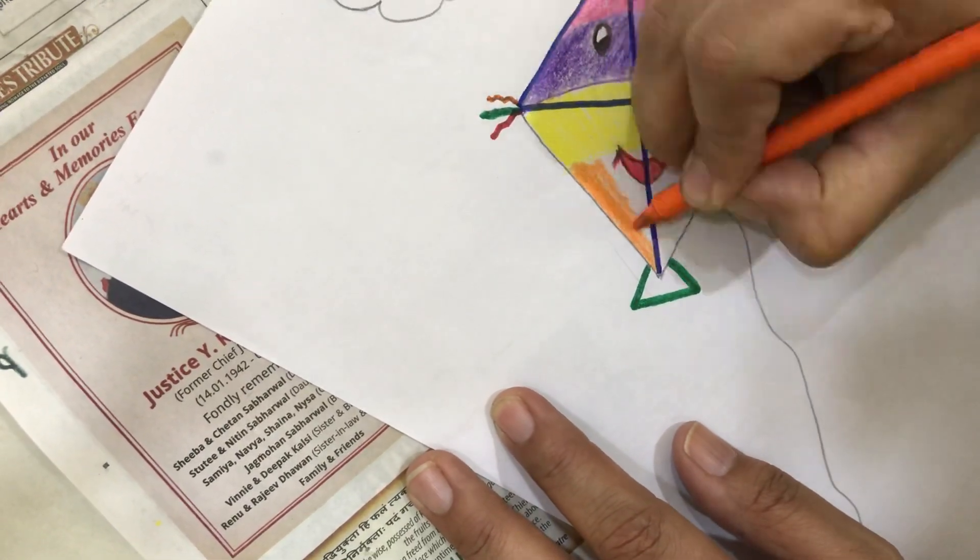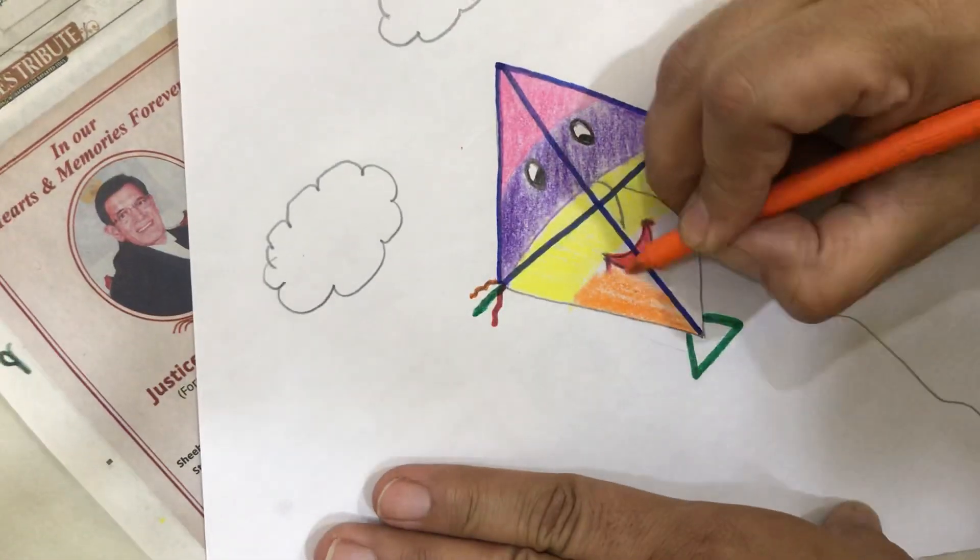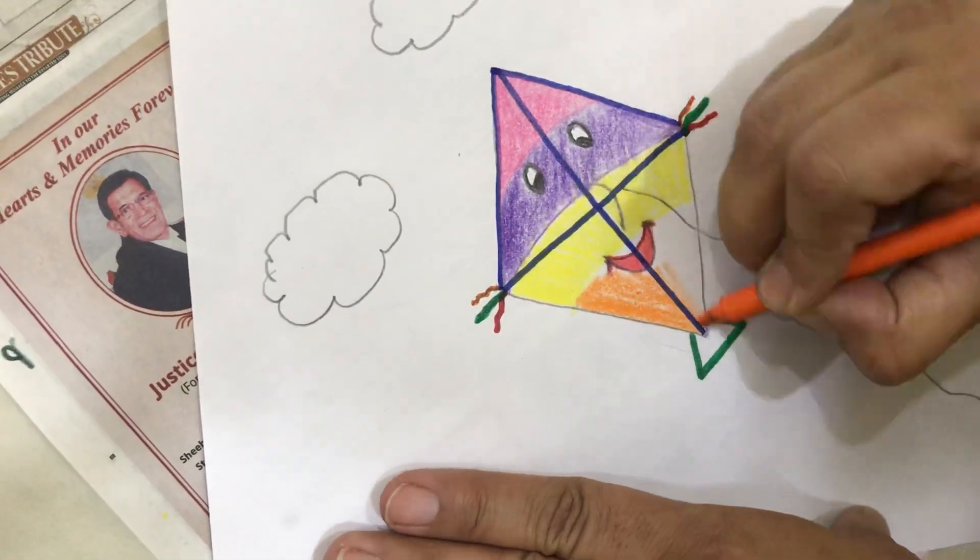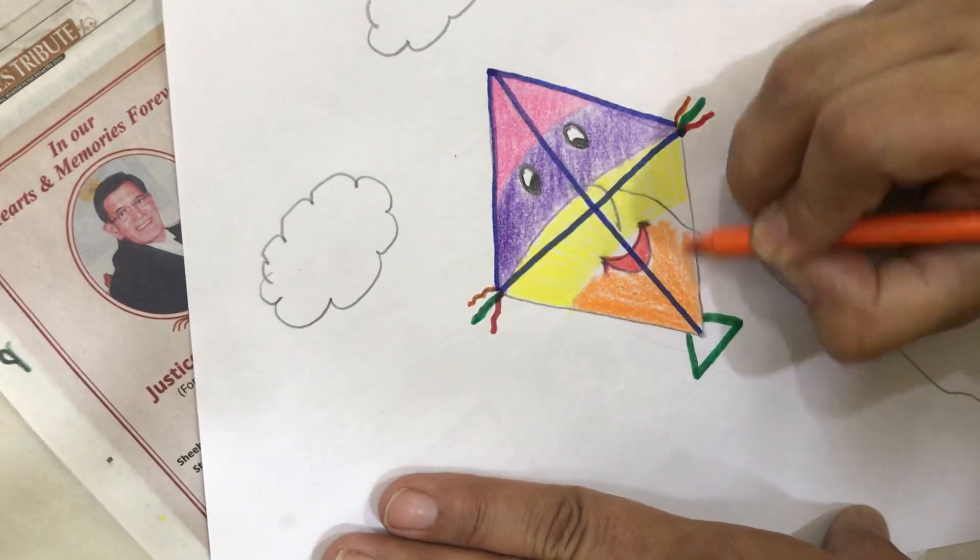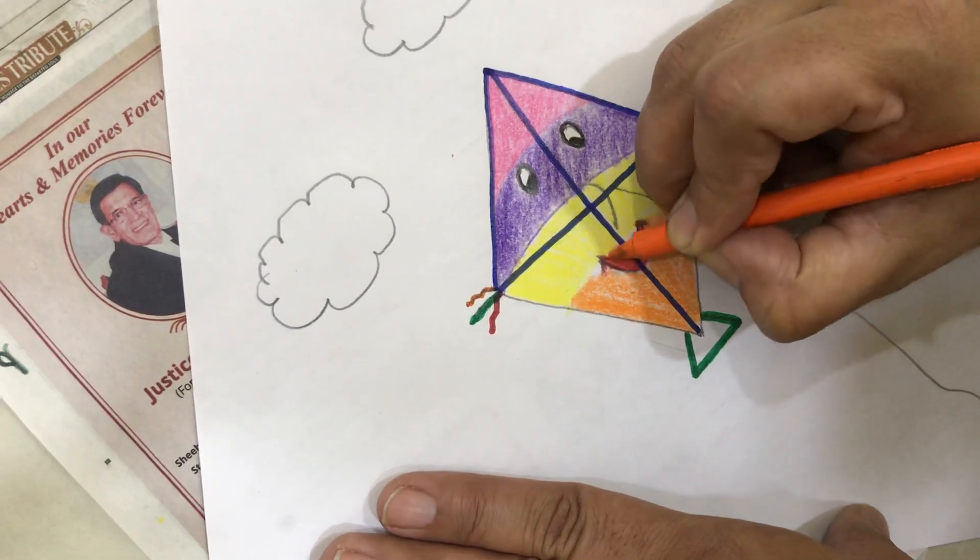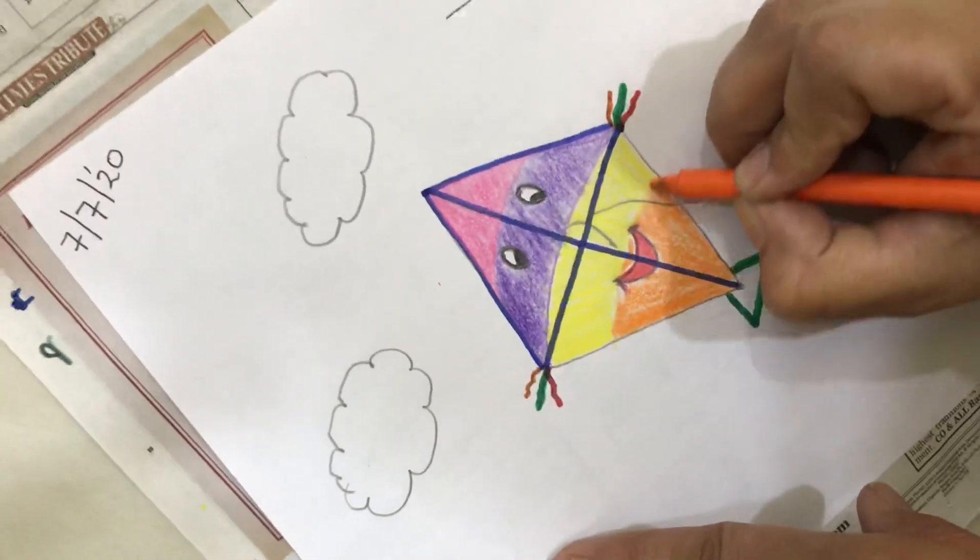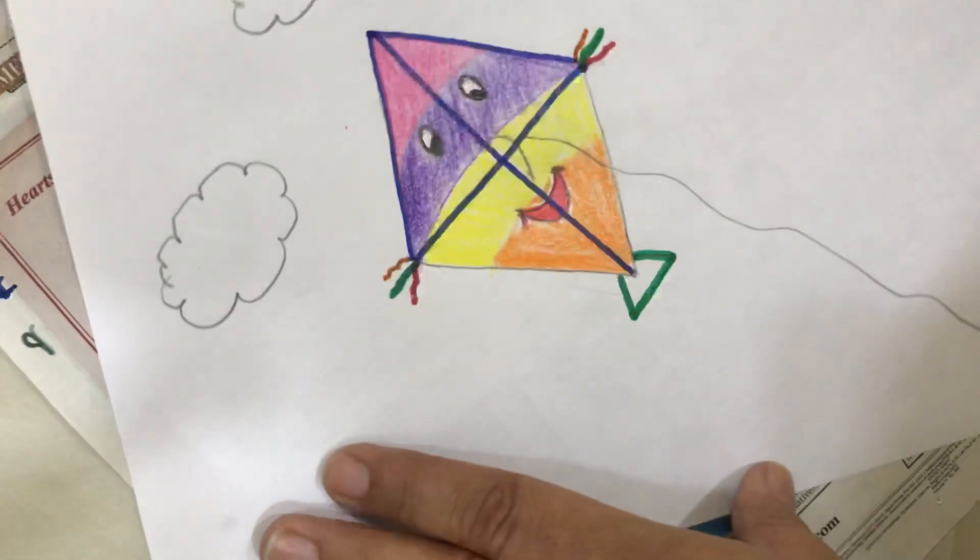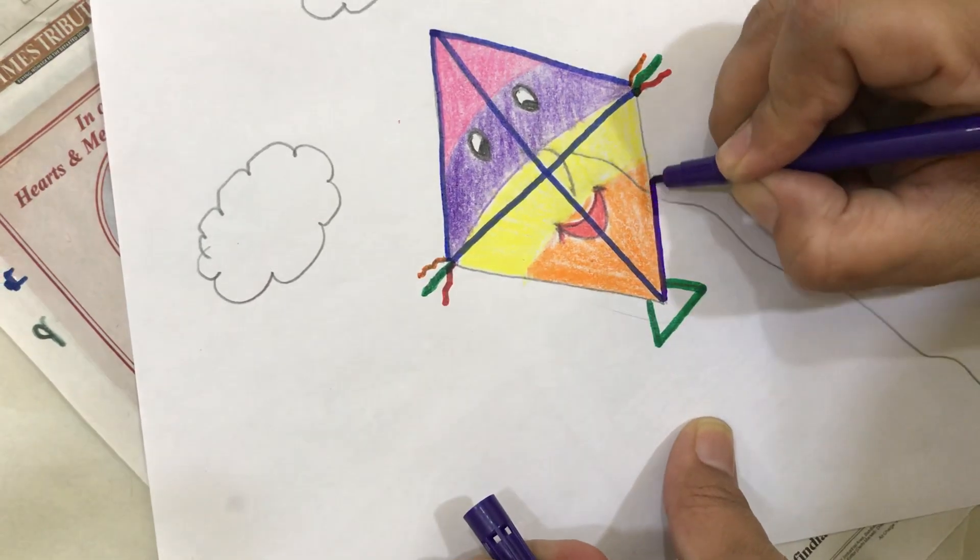And when you come back, I want to see vibrant kites. I don't want to see these colors only. I want to see your choice of colors. I just wanted you to know that with dark and light, how you can mix the colors. It is not that you have to use these colors. And we will complete our outline.